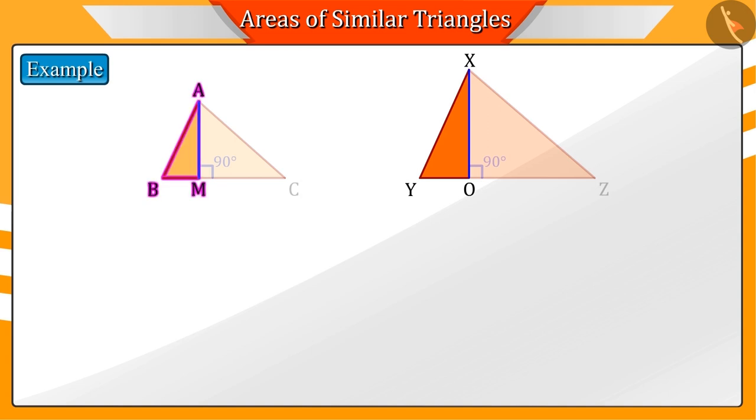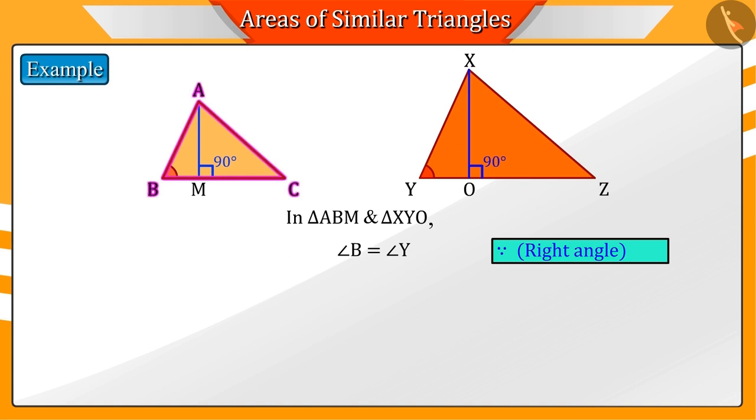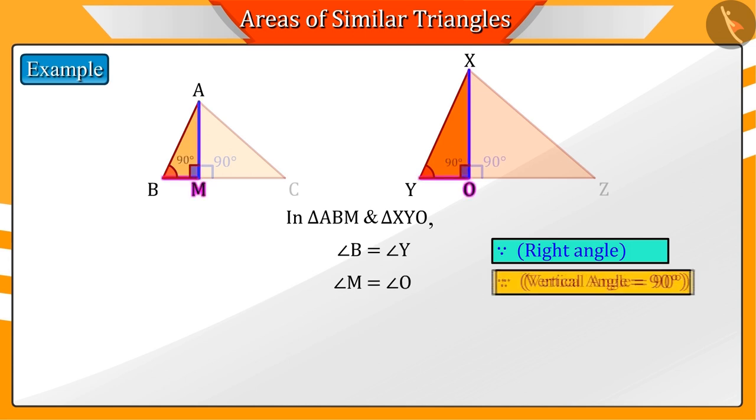Now, let us discuss triangle ABM and triangle XYO. Here, we see that angle B is equal to angle Y because these are corresponding angles of similar triangles ABC and XYZ. And angle M is equal to angle O because angle M and angle O are right angles.